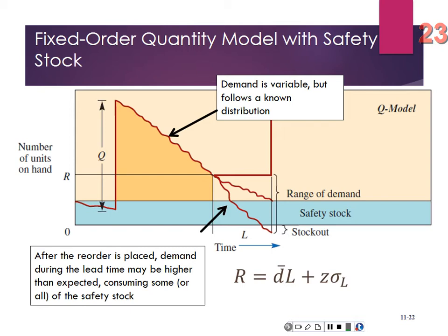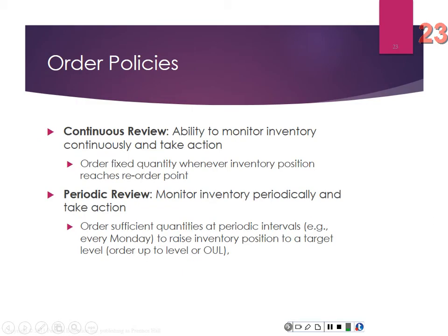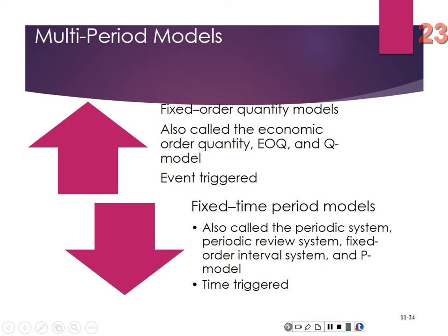Your basic reorder point is average demand times lead time, plus the safety stock piece. In a continuous review policy, we monitor inventory all the time. In a periodic review, we occasionally check inventory and make decisions based on that review.